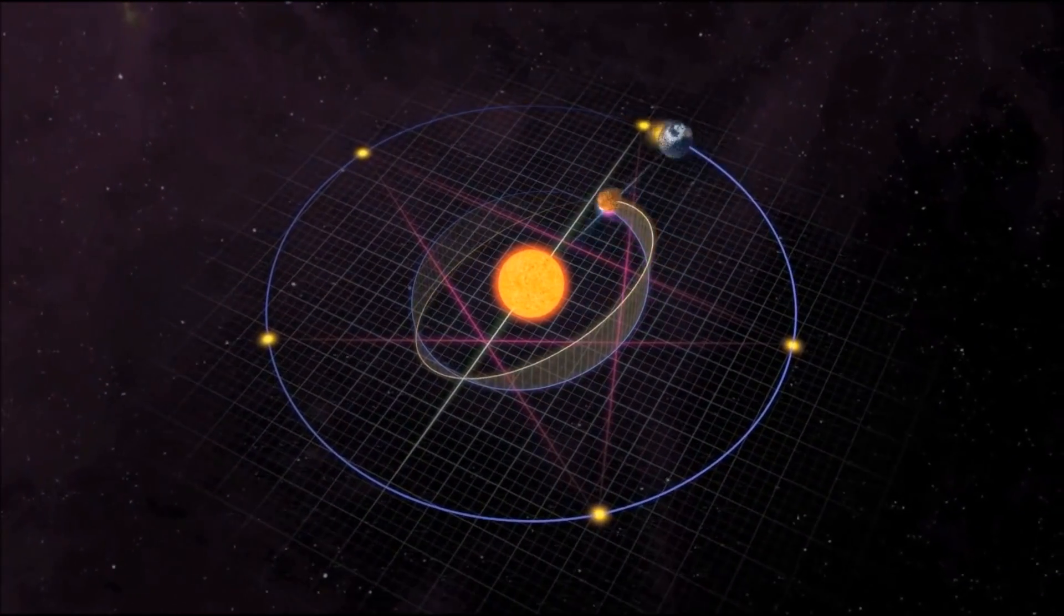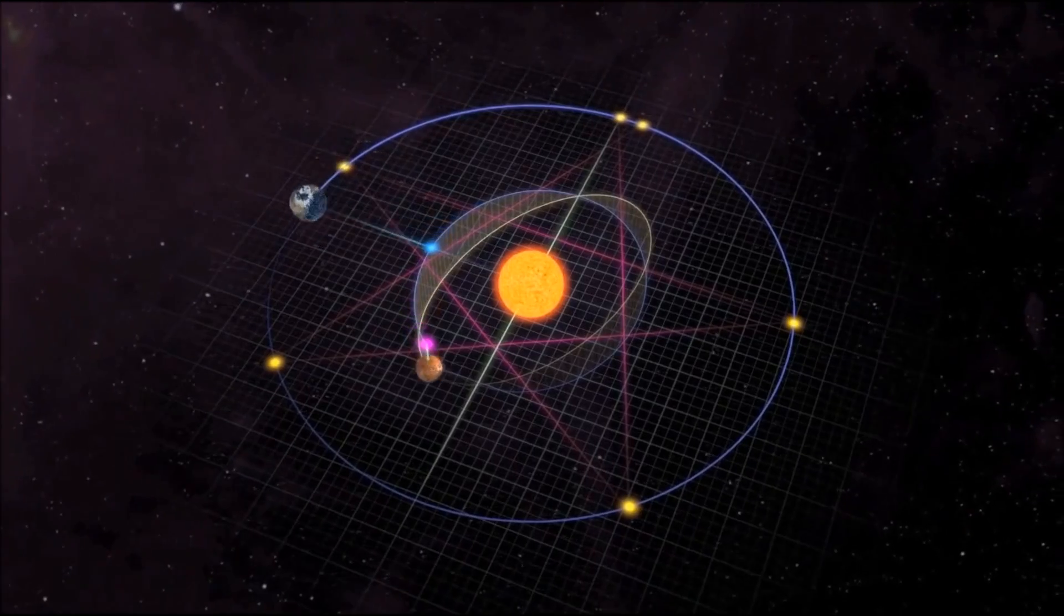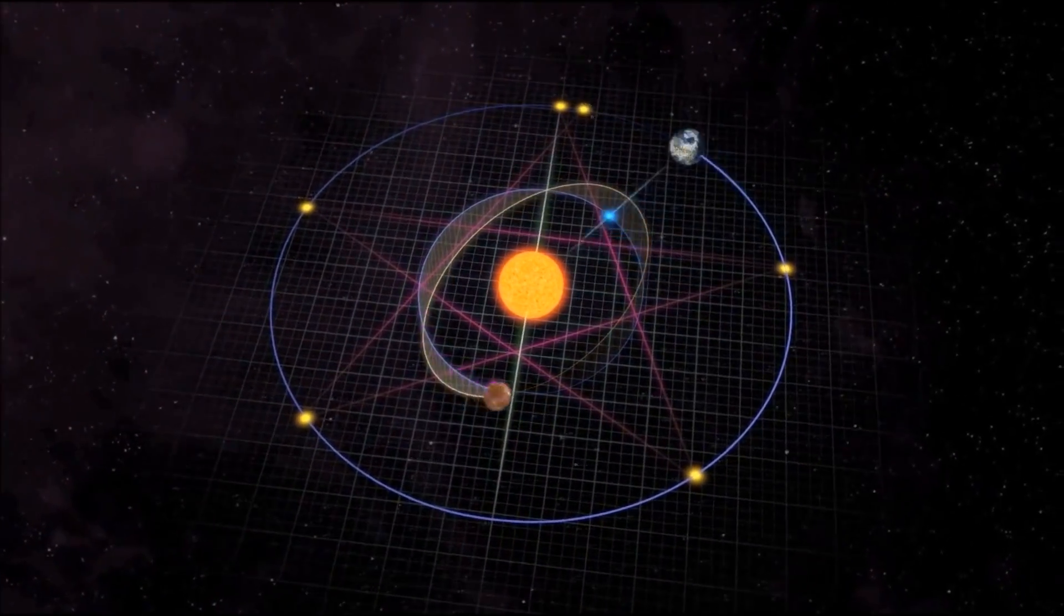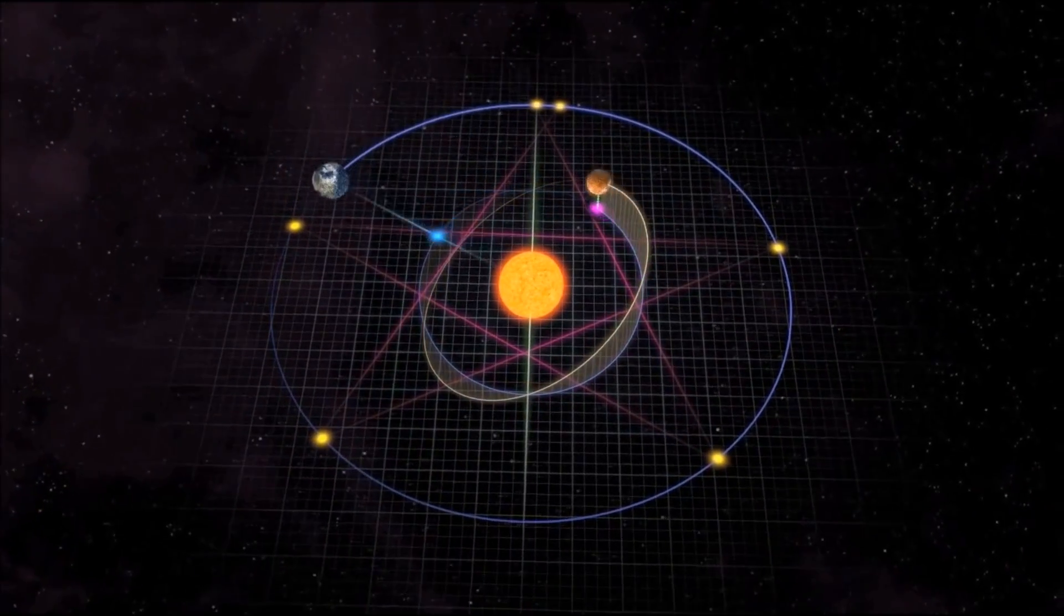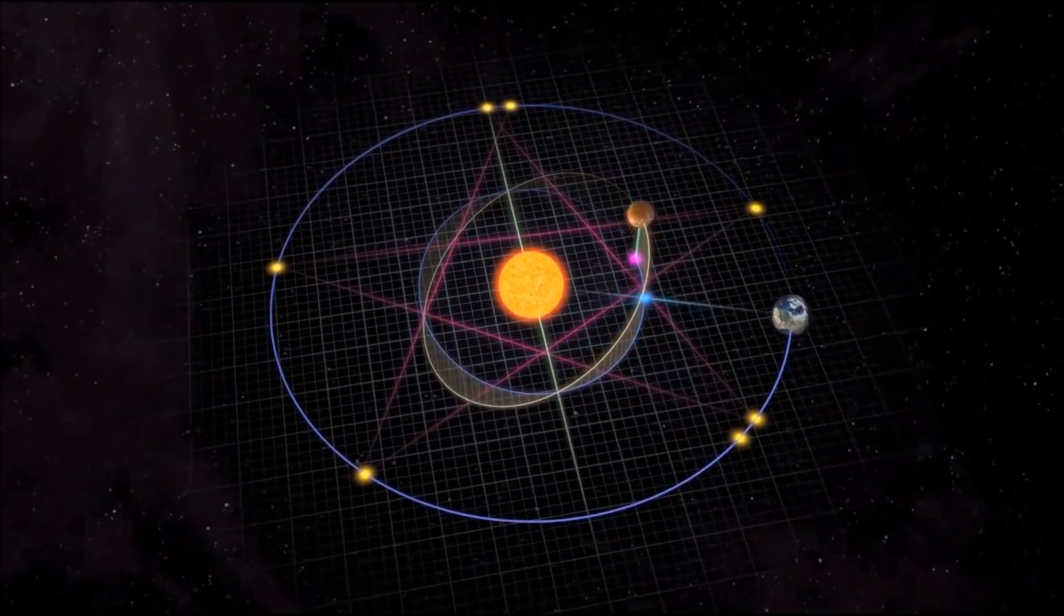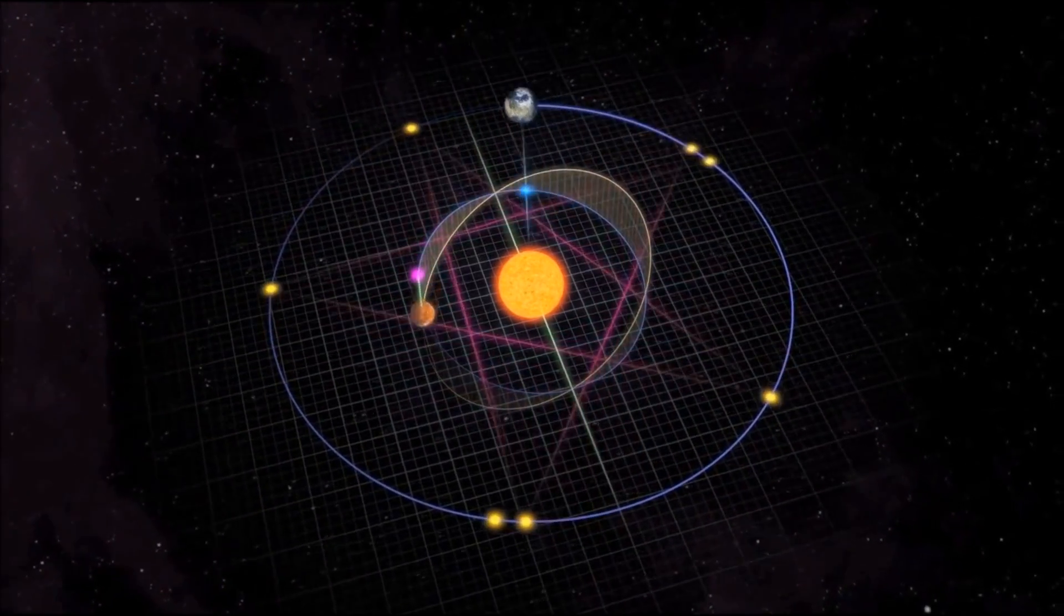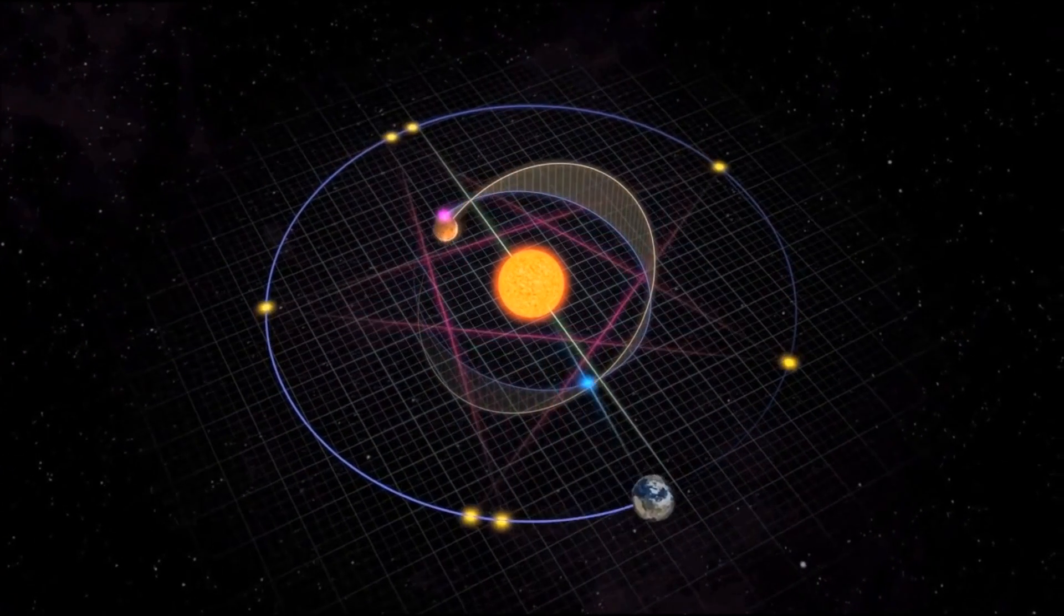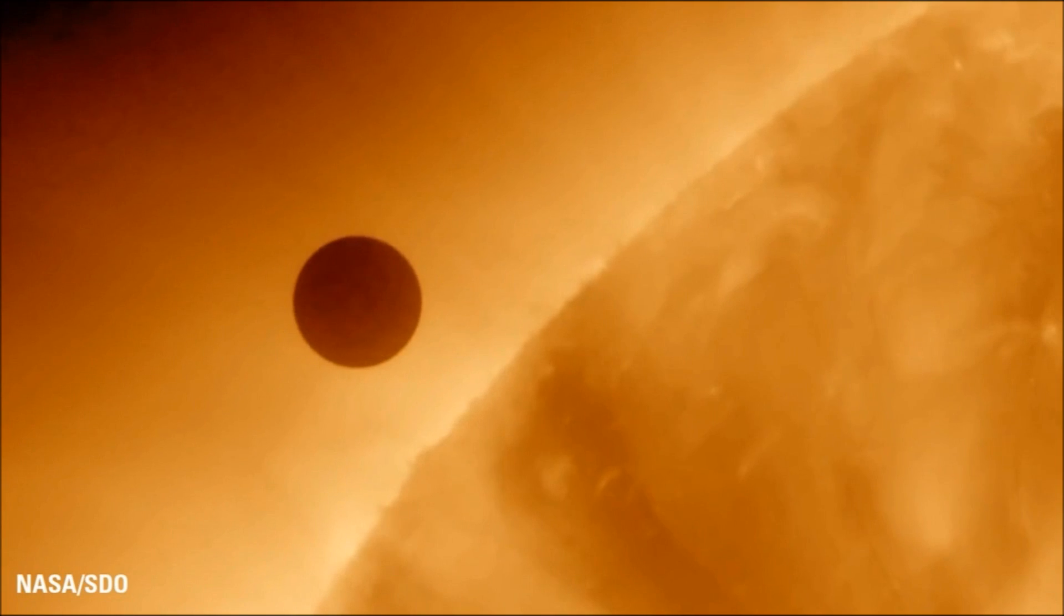And at some point, Venus makes this kind of passage between the Sun and Earth. And that's how they can measure all these angles and found the distance. Looks like a Luciferian thing. Now I understand why they call it the Morning Star. And why it's so important for these Freemasonic people.